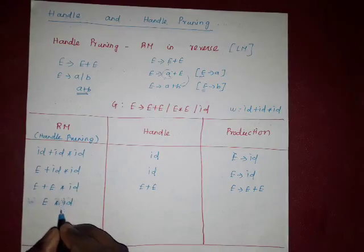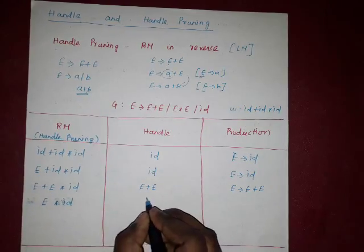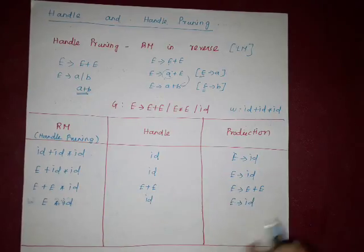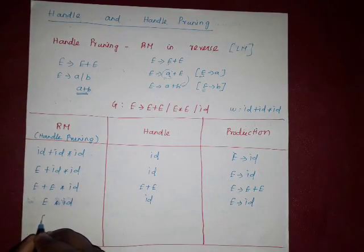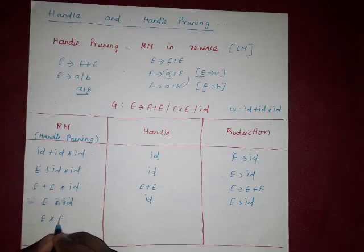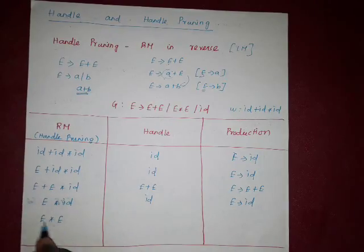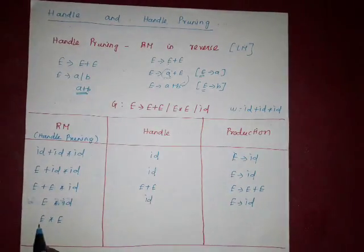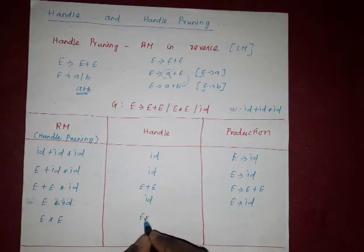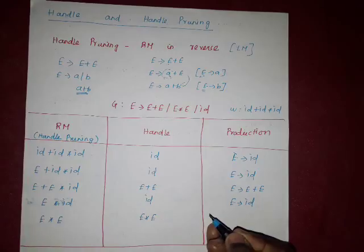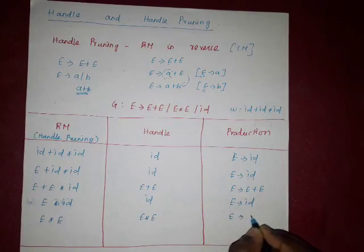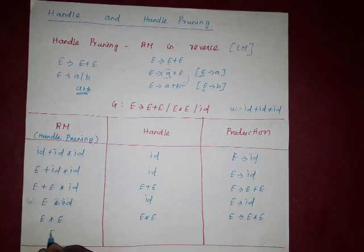In this step, id is going to be reduced. So id is a handle symbol and id is replaced or reduced by capital E. So here, E star E is a handle symbol — which symbol is going to be reduced, that symbol is known as handle symbol. So E star E is replaced or reduced to capital E.